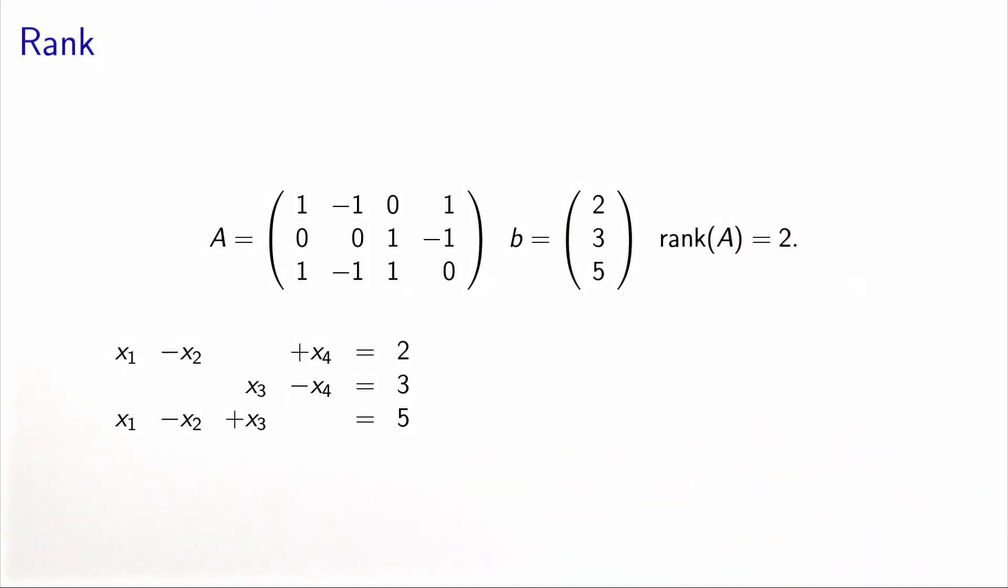Now, let's look at a concrete system of equations and analyze the rank of the associated matrix. Here we have three constraints and four variables. The three constraints are x1 minus x2 plus x4 equals 2, x3 minus x4 equals 3, and x1 minus x2 plus x3 equals 5.